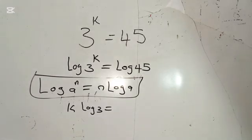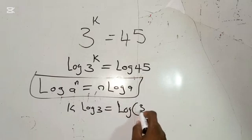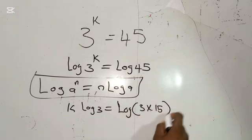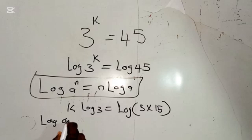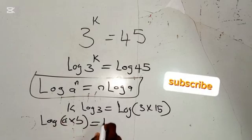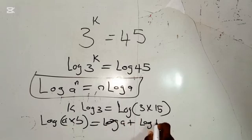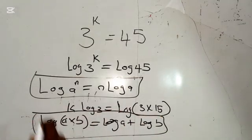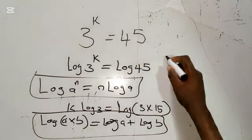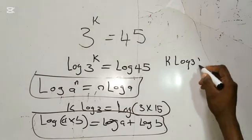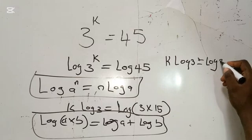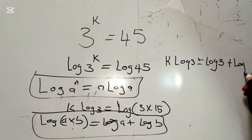We can rewrite 45 as log 3 times 15. And recalling the log property for multiplication, we have log a multiplied by log b is equal to log a plus log b. So using this property, we are going to have k log 3 is equal to log 3 plus log 15.